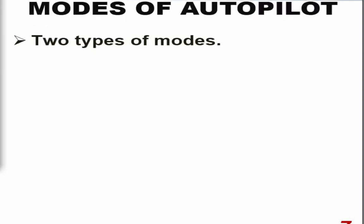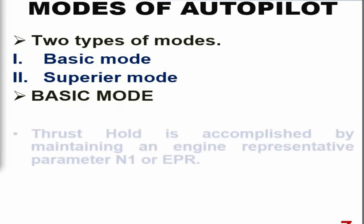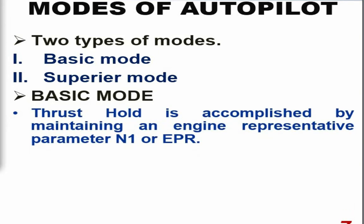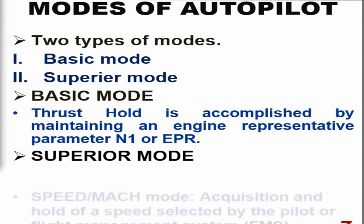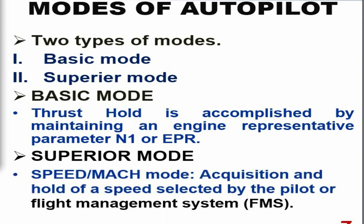There are two types of autopilot modes: basic modes and superior modes. An example of a basic mode is thrust hold, which is accomplished by maintaining an engine representative parameter such as N1 or EPR. An example of a superior mode is speed oblique mode, where acquisition and hold of a pilot-selected speed are managed by the flight management system, controlled through the flight management computer (FMC), which provides navigational, fuel management, and other assistance to the autopilot computer.